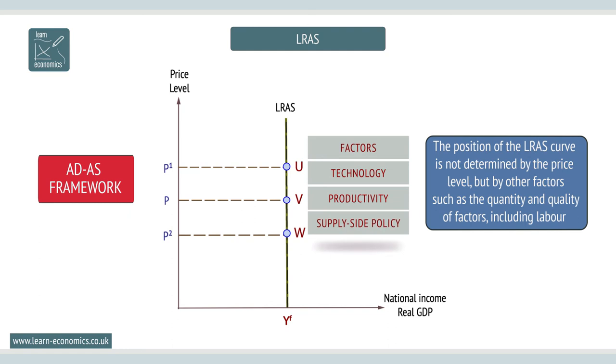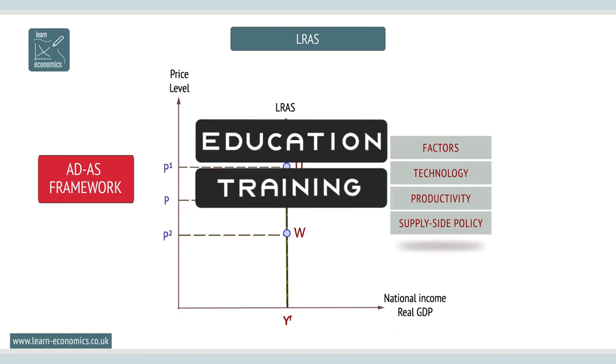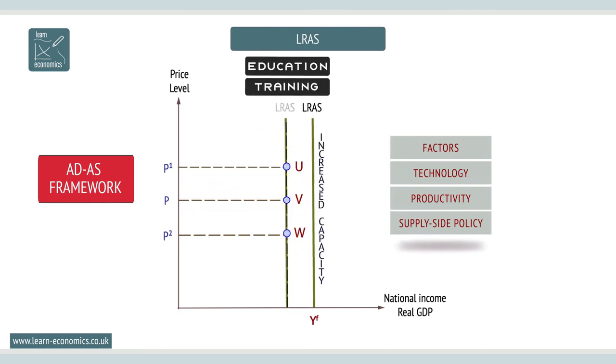Although vertical, the LRAS can shift if productive potential changes, such as when education and training, or new technology, improves labour productivity.